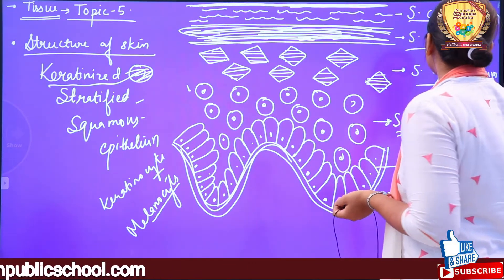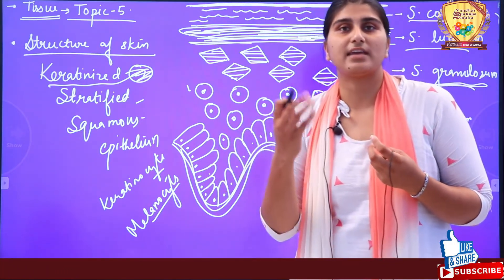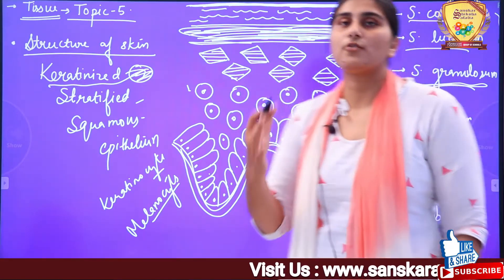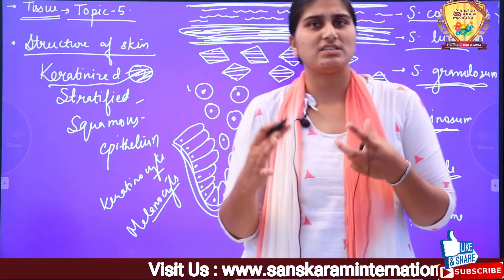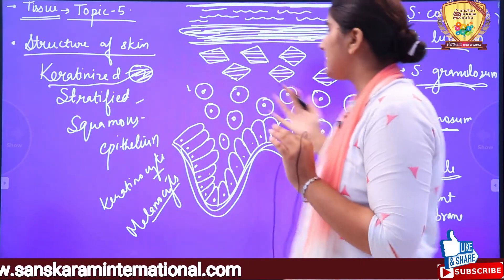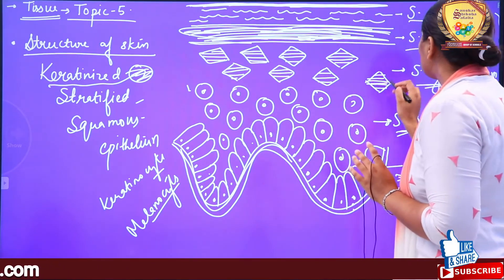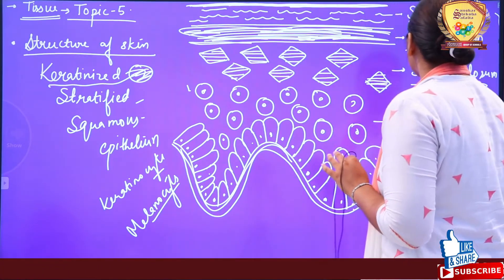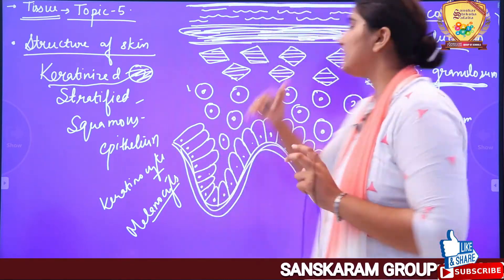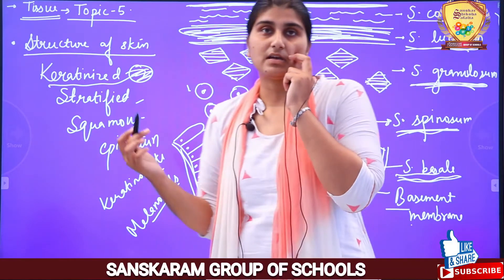Above stratum spinosum is stratum granulosum. Inside the cells of this layer, keratin formation has begun. When cells become completely filled with keratin, they will become dead cells. So remember that keratin formation starts in the granulosum layer.